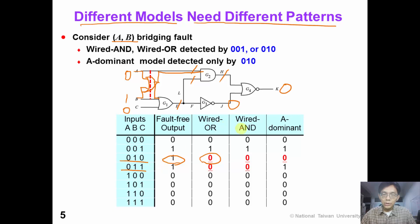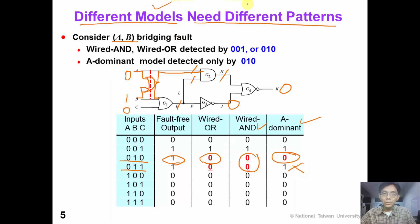If we use the wire-AND fault model, we can also detect the fault using the same test patterns. However, if we use the A-dominant fault model, we can only detect the fault by 0, 1, 0 but not by 0, 1, 1. From this example, we know that different bridging fault models require different test patterns.